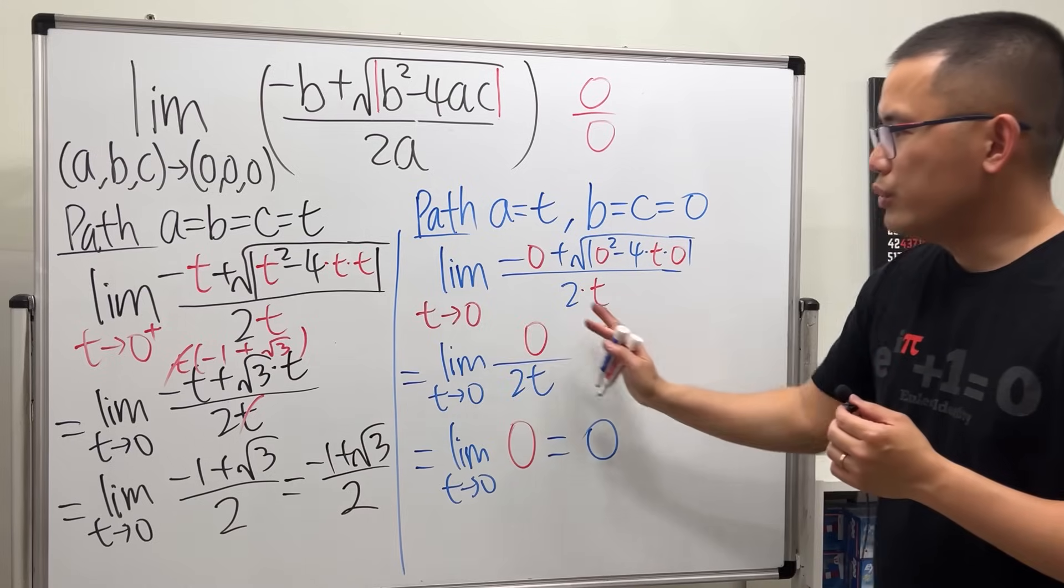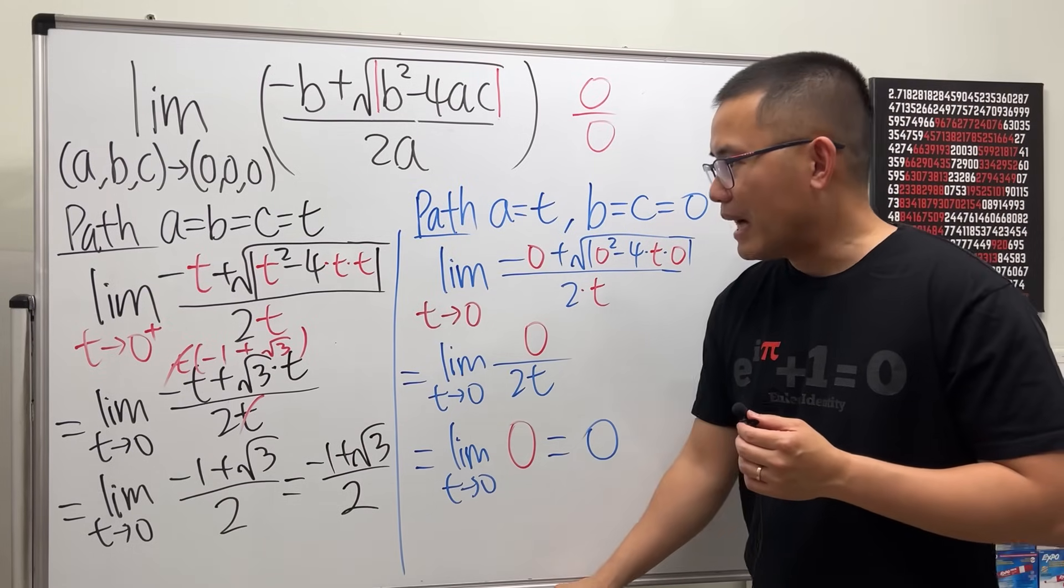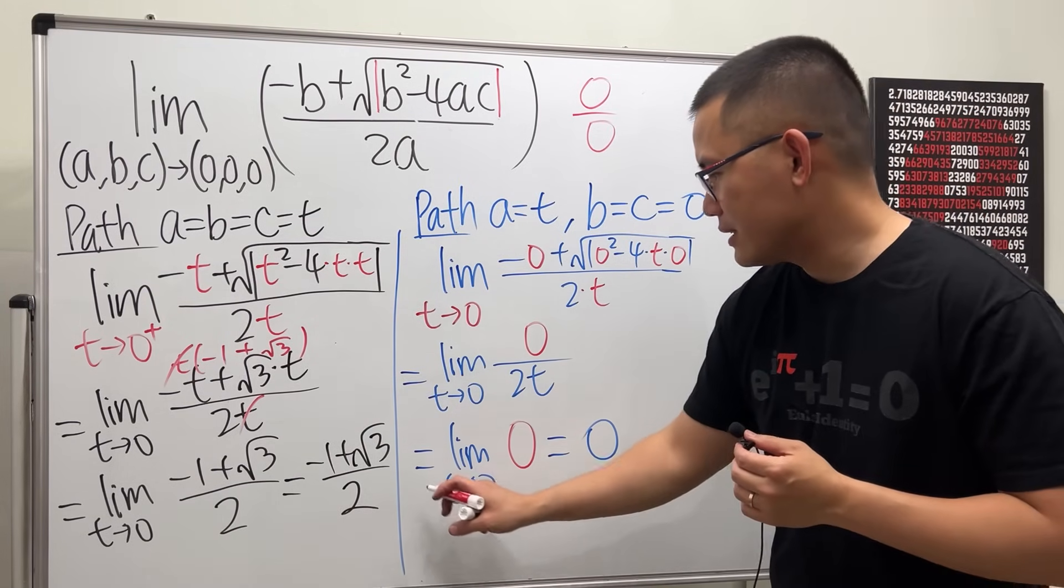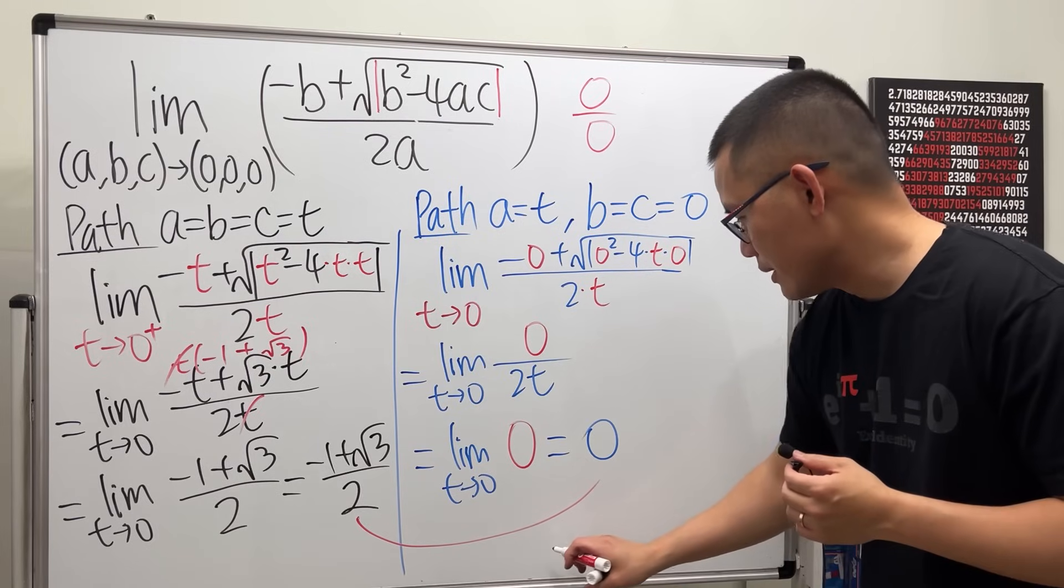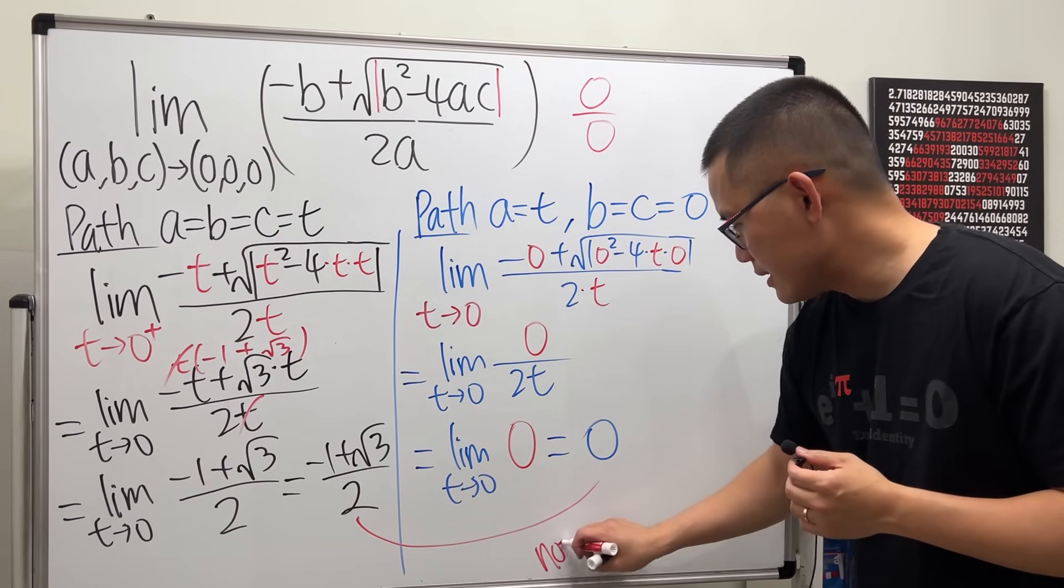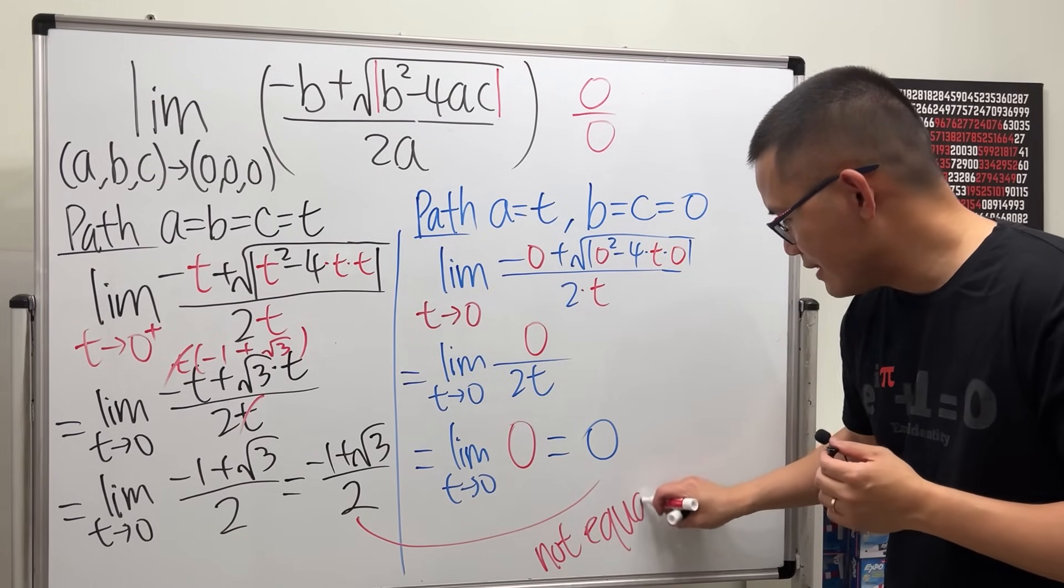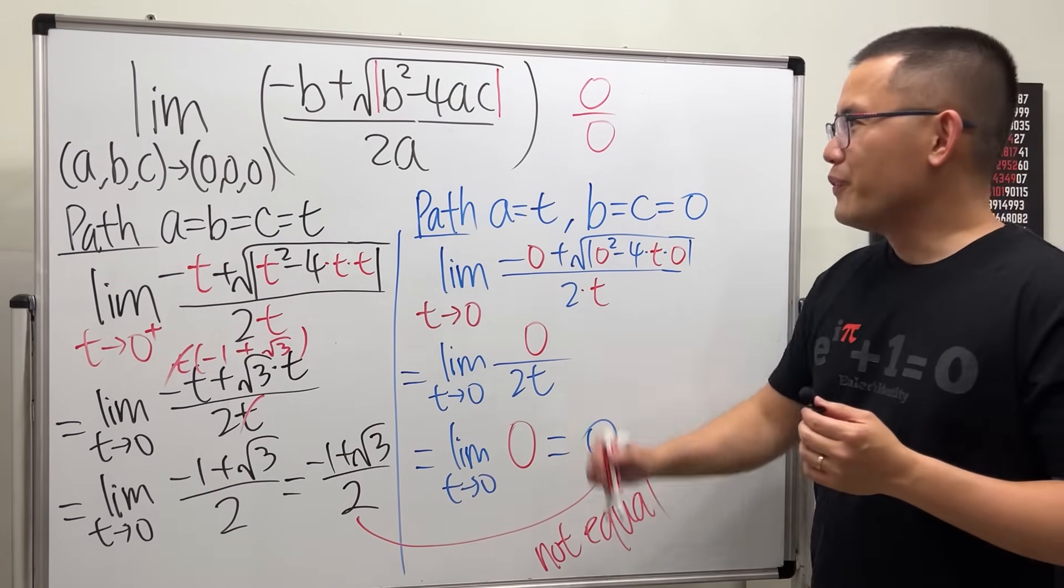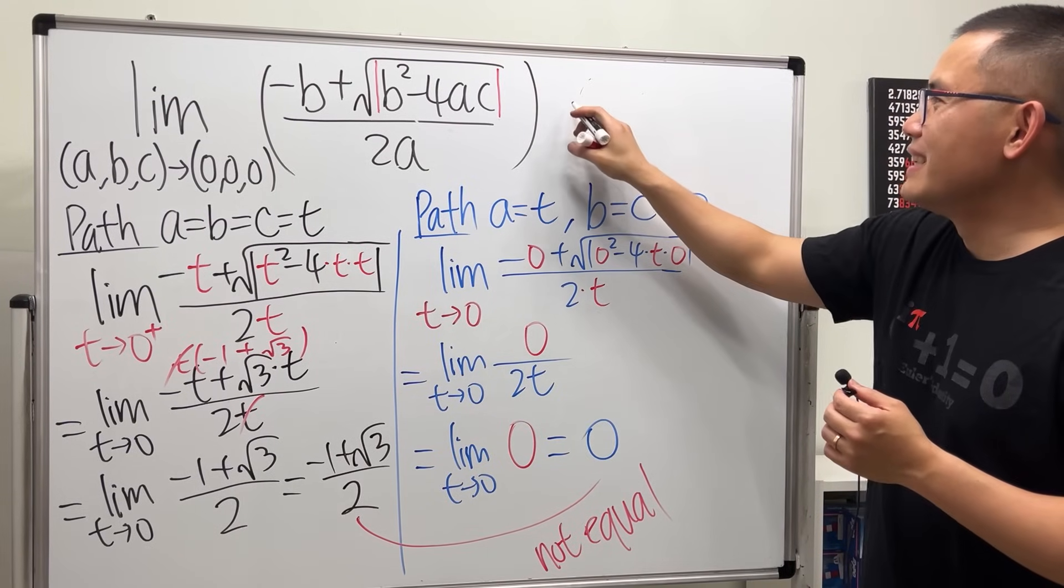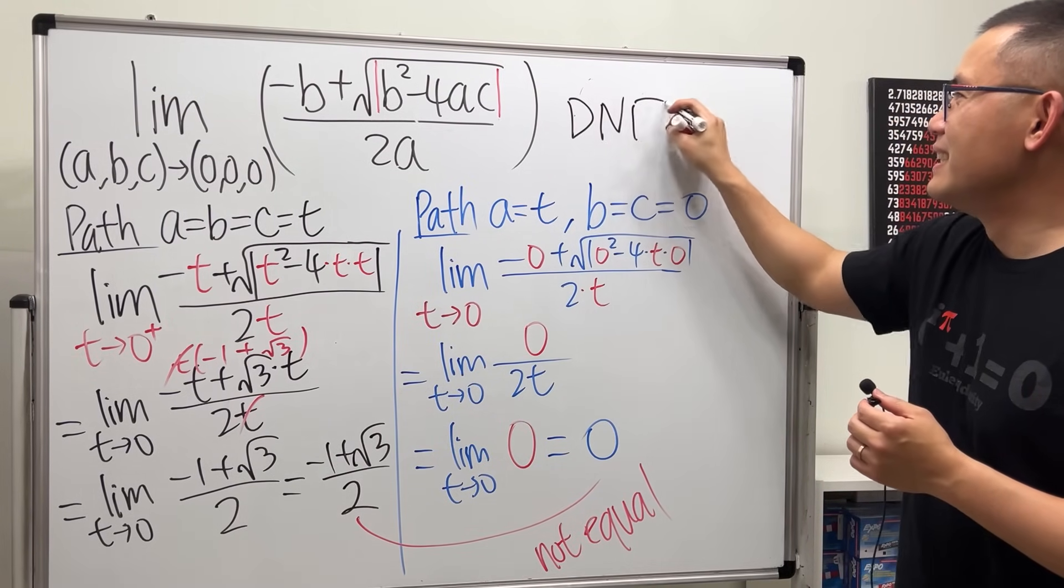And you see, this right here will give you zero. Yeah, so we have two different paths but the limits are different. So of course, I'll just tell you they are not equal. So therefore we can come back to here and say this limit does not exist.